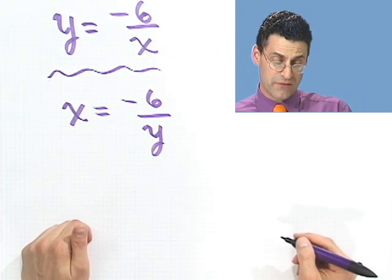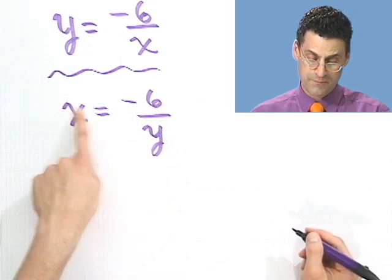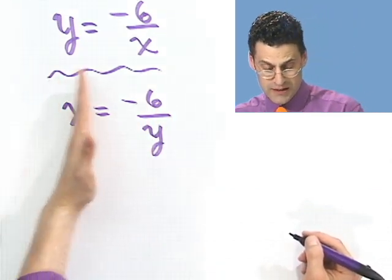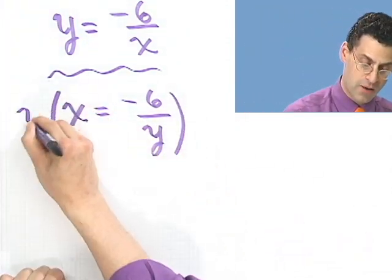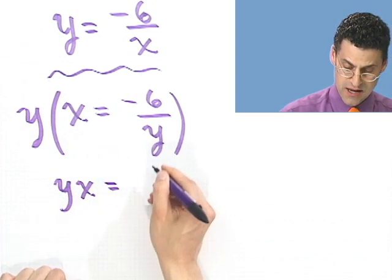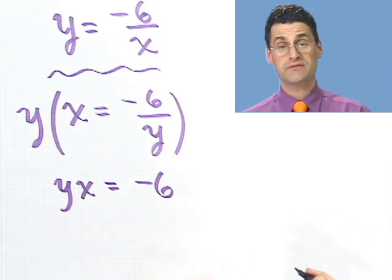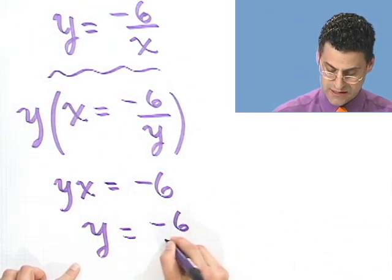Well, there are a variety of things you could do. I guess you could cross multiply. Think of x as being x over 1. The other thing you could do is multiply everything through by y. I think I'll do that. I'll multiply every single thing through by y. So on this side I see yx, and on the other side I just see minus 6. Now I divide both sides by x, and I see y equals minus 6 over x.